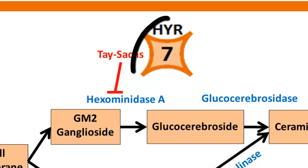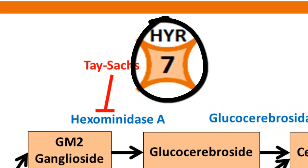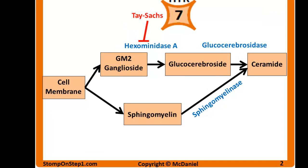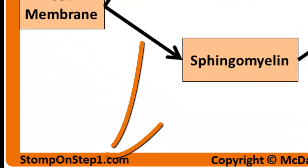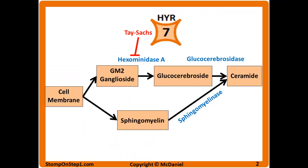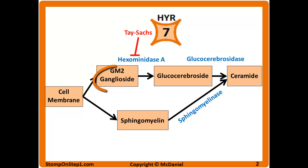Tay-Sachs, which I give a high yield rating of 7 — for those of you who don't know, it is a rating scale from 0 to 10 giving you a rough estimate for how important each topic is for Step 1, and if you want to learn more about that you can head to my website. Tay-Sachs is a deficiency of the hexosaminidase A enzyme, and when you have a deficiency of this enzyme you're going to have the substrate GM2 ganglioside build up and cause issues.